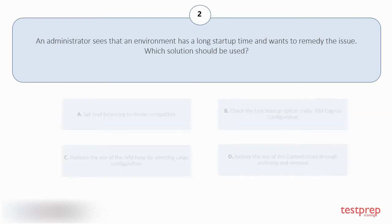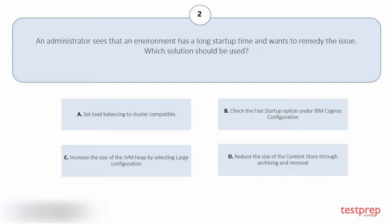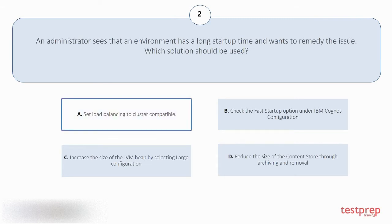Your options are: A. Set Load Balancing to Cluster Compatible. B. Check the Fast Startup option under IBM Cognos Configuration. C. Increase the size of the JVM heap by selecting Large Configuration. D. Reduce the size of the Content Store through Archiving and Removal. The correct answer is option A.